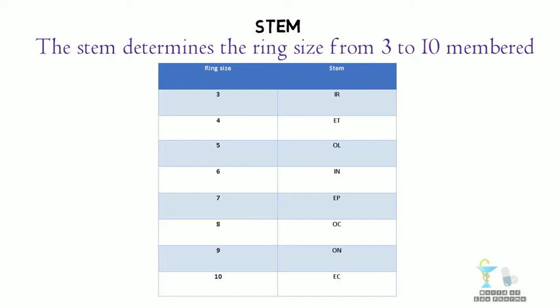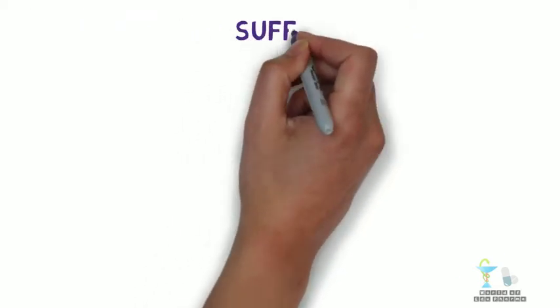If the ring size is 9, then ON is used. If the ring size is 10, then EC is used. Remember this table; it will be useful for you.